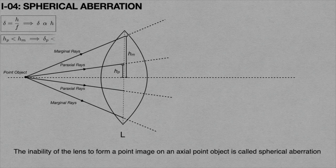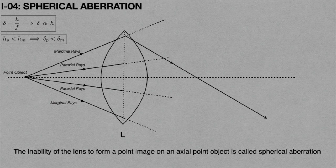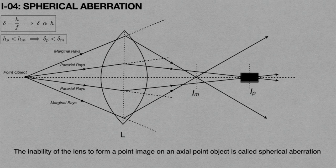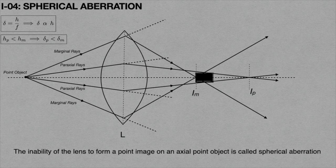Therefore, the marginal rays get more deviation than paraxial rays. As a result, due to higher deviation of marginal rays, these marginal rays form an image at point Im. Similarly, due to lower deviation of paraxial rays, the paraxial rays form an image at point Ip. The images occur from Im to Ip, and the image is not clear at any point in between. If we place a screen perpendicular to the principal axis between Ip and Im, the image is not clear at any place. At a particular point, the image forms in a circular shape — this circle is called the circle of least confusion, and it forms where the paraxial and marginal rays meet.